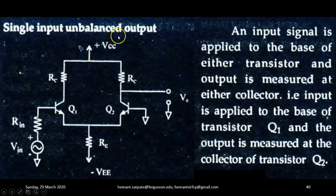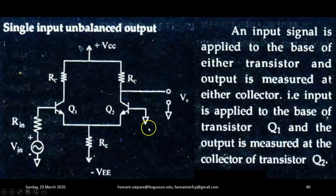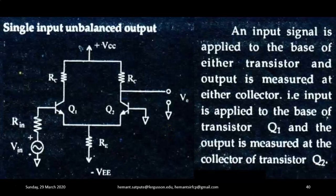The last configuration is single input, unbalanced output. As the diagram shows, an input signal is applied to the base of transistor Q1, and the output is measured at the collector of transistor Q2. So it is single input and single output — that is, single input, unbalanced output. All components are perfectly matched — both collector resistors and transistors Q1 and Q2.